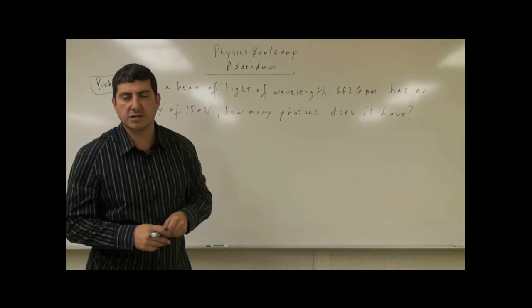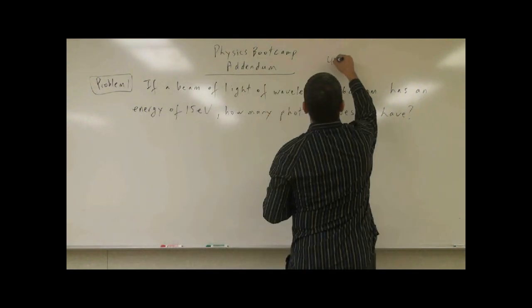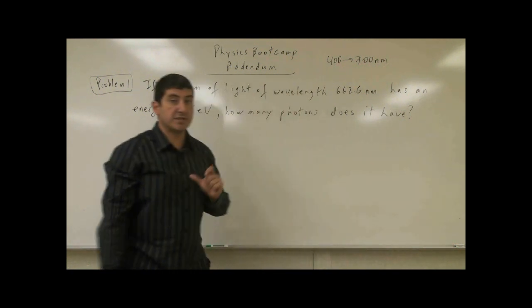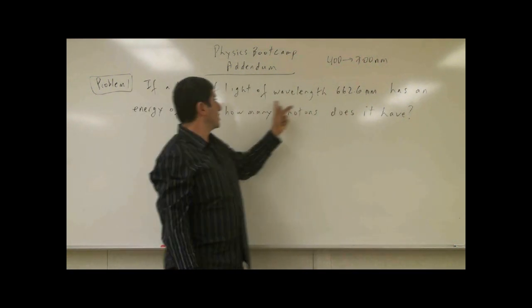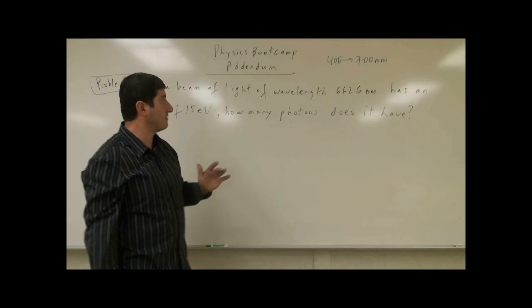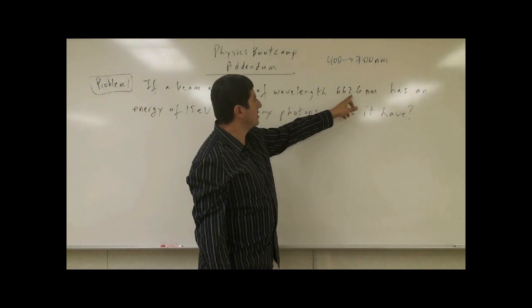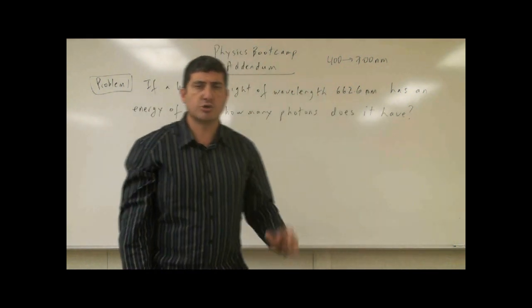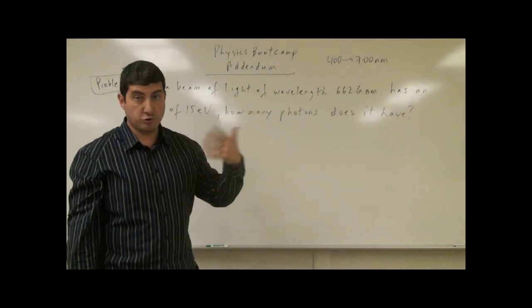These questions will involve more math and problem solving. Remember when we talked about the electromagnetic spectrum, we said from 400 to 700 nanometers is the visible light range. So we're talking here about a beam of light which is monochromatic, which has the same wavelength, 662.6, that's going to be about a red color. This is a red beam, it could be a laser beam.